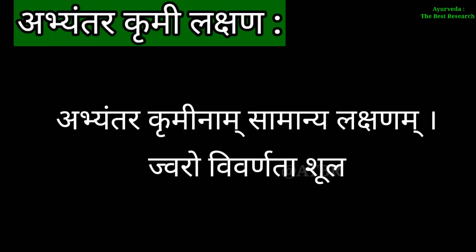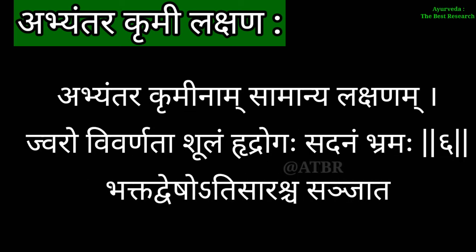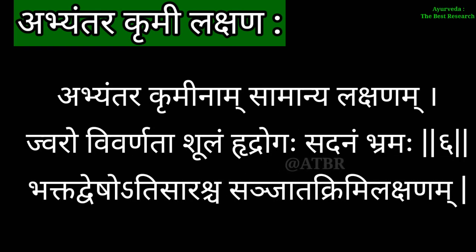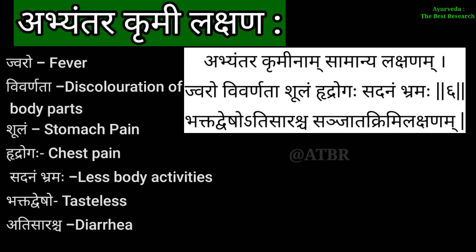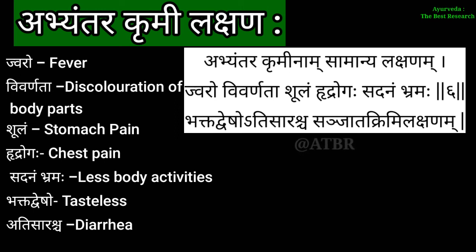The Samanya Lakshanas of Abhyantara Krumi are: Chvara means fever; Vivanata means discoloration of the skin; Shula means pain; Udhaya Roga means heart diseases; Sadhana means less body activity; Bhaktadvesha means Aruchi (loss of appetite); Atisara means diarrhea. These all are the Lakshanas of Abhyantara Krumi Roga.